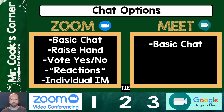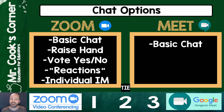Chat options — this is where Zoom has Google Meet beat hands down. If you're hosting a meeting with lots of people, you're going to want to use Zoom, plain and simple. With Google Meet, you can do basic chat on the side — you can talk to one another and post things, but that's about it. With Zoom, you can do basic chat, but also virtually raise your hand when everybody is muted, vote yes or no on things, use reactions such as clapping and thumbs up, and send individual messages to one another. So if you're in a room of 50 people and just want to say something to Sarah, you have that ability as long as the host gives you participation access. Zoom is definitely the champion on this one.